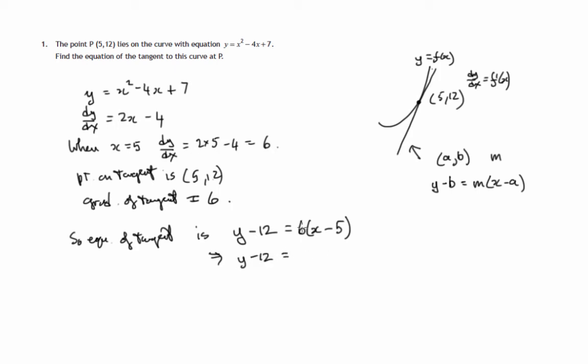So let's sort this out, tidy it up a bit, get rid of the bracket: 6 times x, and 6 times negative 5 is minus 30. Then we're going to get negative 30, add 12 to both sides, and we'll get minus 18. So y equals 6x minus 18 is the equation of the tangent to the curve at P.